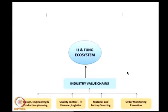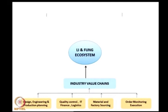Let us map the Li and Fung ecosystem. The industry value chains include: design, engineering and production planning; material and factory sourcing; quality control, IT, finance and logistics; and order monitoring and execution. Each of these four functions will have their own sub-service chains. When sourcing materials, you need another service chain — wherever you are sourcing, you check quality, choose a logistics provider, and send it to its destination. So each function has its own service chain.